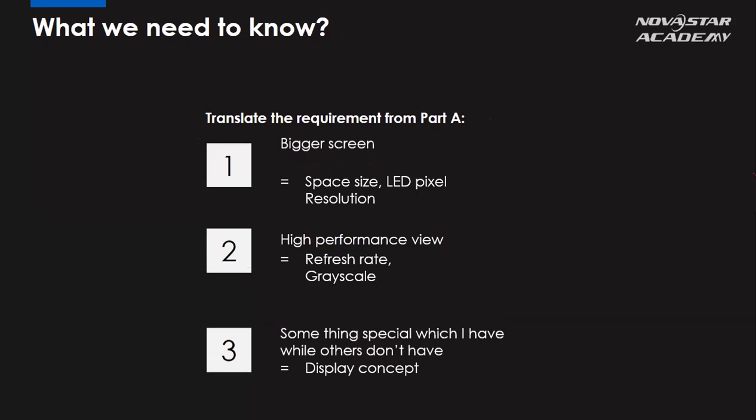Let's go through them one by one. For the first — wanting a bigger screen — we need to measure the installation space. Depending on the installation space, we need to select a suitable pixel pitch for the LED screen. Once we have the space size and the pixel pitch, along with the cabinet size, we can calculate a precise resolution for the large screen and know exactly what resolution we'll be installing in that space.